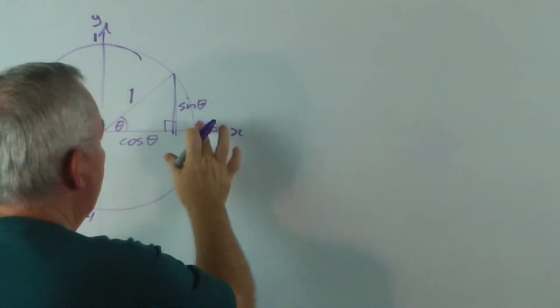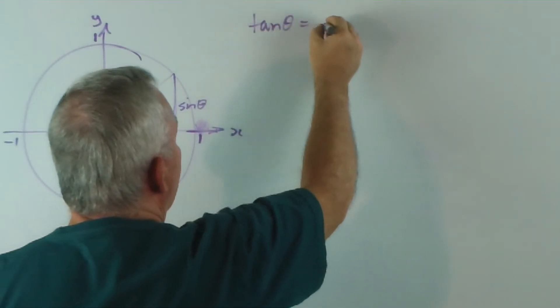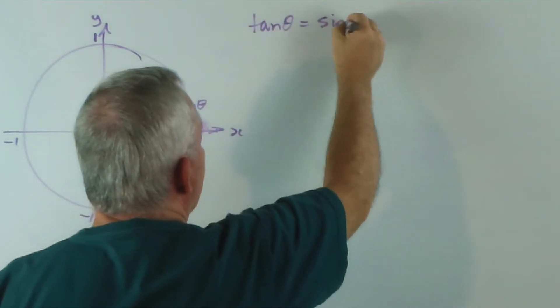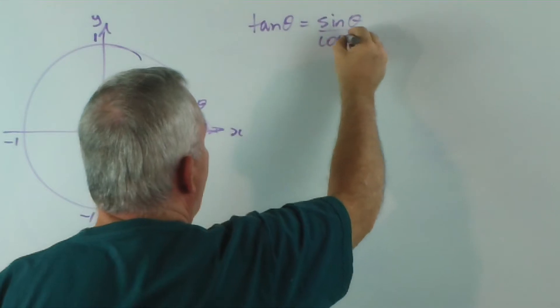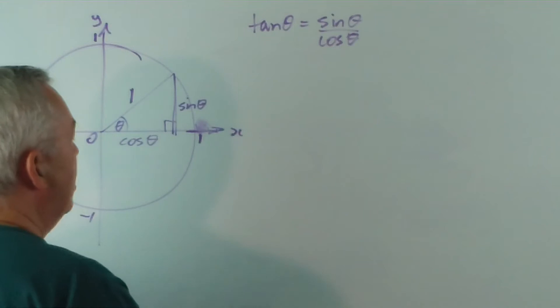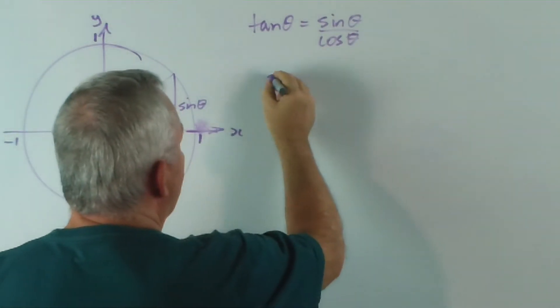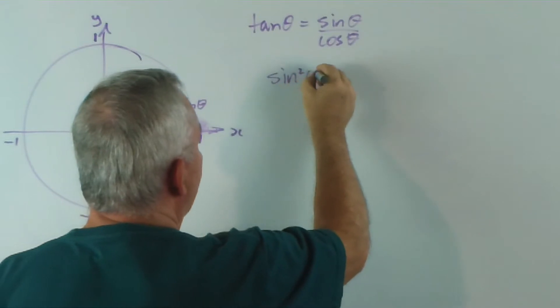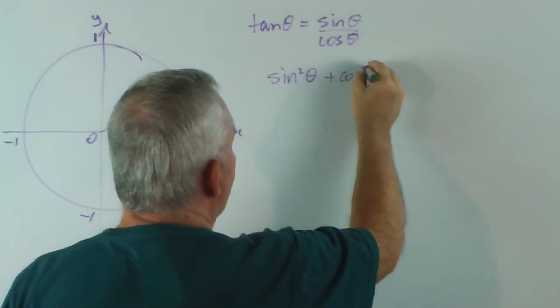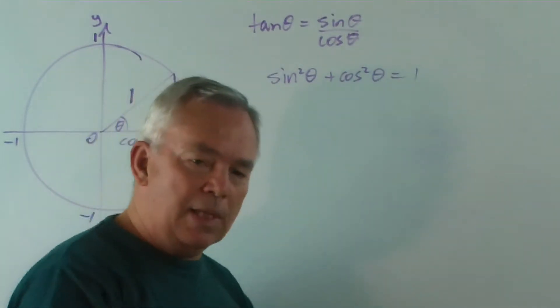And from it we learned that tan theta was sine theta over cos theta. That was the first identity that we gained. And the second, by applying Pythagoras' theorem, was that we learned that sin squared theta plus cos squared theta equals one. So that's where we're up to.